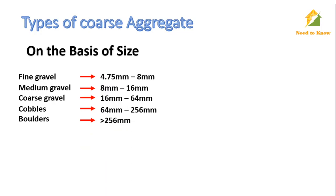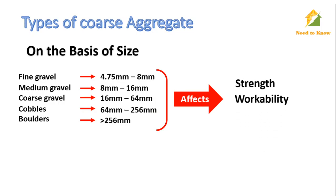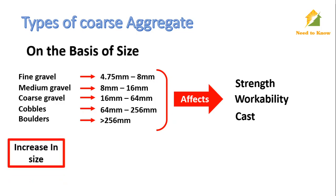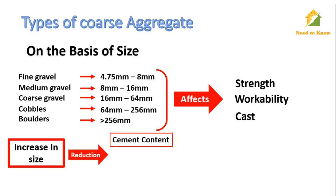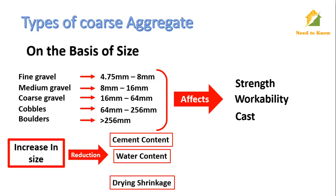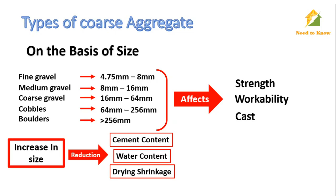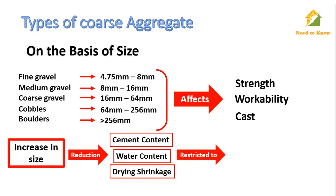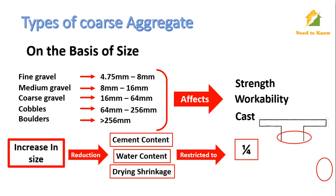The size of the coarse aggregate affects several aspects — mainly strength, workability, and cost. Using the largest possible size results in reduction in cement content, reduction in water content, and reduction of drying shrinkage. When selecting the maximum size, the following points must be kept in mind.